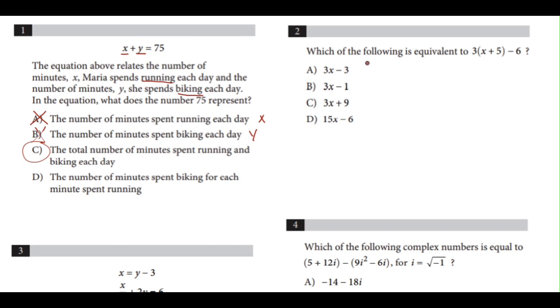Number 2. Which of the following is equivalent to 3(x + 5) - 6? The first step is going to be to distribute the 3 on the outside. 3 times x is 3x, 3 times 5 is 15, minus 6.